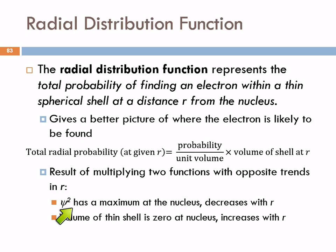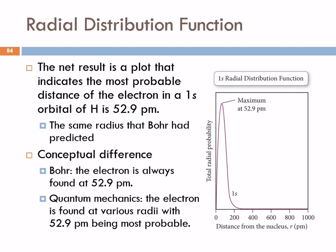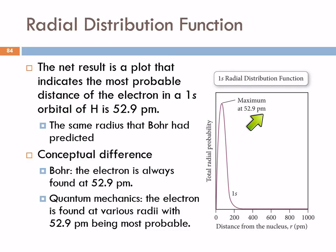And we have opposite trends here. Psi squared has a maximum at the nucleus and decreases with r. The volume of the thin shell is zero at the nucleus and increases with r. So this gives us a better result — the probability of the electron being at the nucleus is zero. It rises sharply to a maximum at a radius of 52.9 picometers from the nucleus, and then it falls off again. So for hydrogen, in that 1s orbital, the predicted most probable distance is 52.9 picometers. And the Bohr model predicts the same distance.